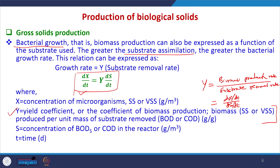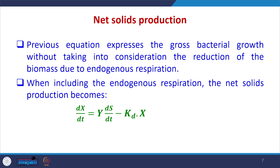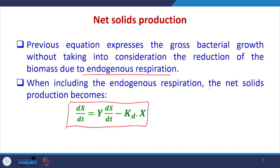From this equation we can see that greater substrate assimilation means a higher bacterial growth rate. Here x is the concentration of microorganisms in VSS, and S is the substrate concentration in terms of BOD or COD in grams per liter. The previous equation expresses gross bacterial growth without considering the reduction of biomass due to endogenous respiration. When including endogenous respiration, the equation is modified, and the net solid production is obtained.